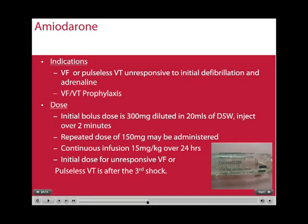The initial bolus dose is 300 mg diluted in 20 mls of 5% glucose, injected over a 2-minute period. If it seems to be helping, repeated doses of 150 mg may be administered, and a continuous infusion of 15 mg/kg over 24 hours can be started. It is given after the third shock and should never be given for somebody who is in conscious VT, because due to its vasodilation effects, it may push somebody into an arrest if given over a 2-minute period.